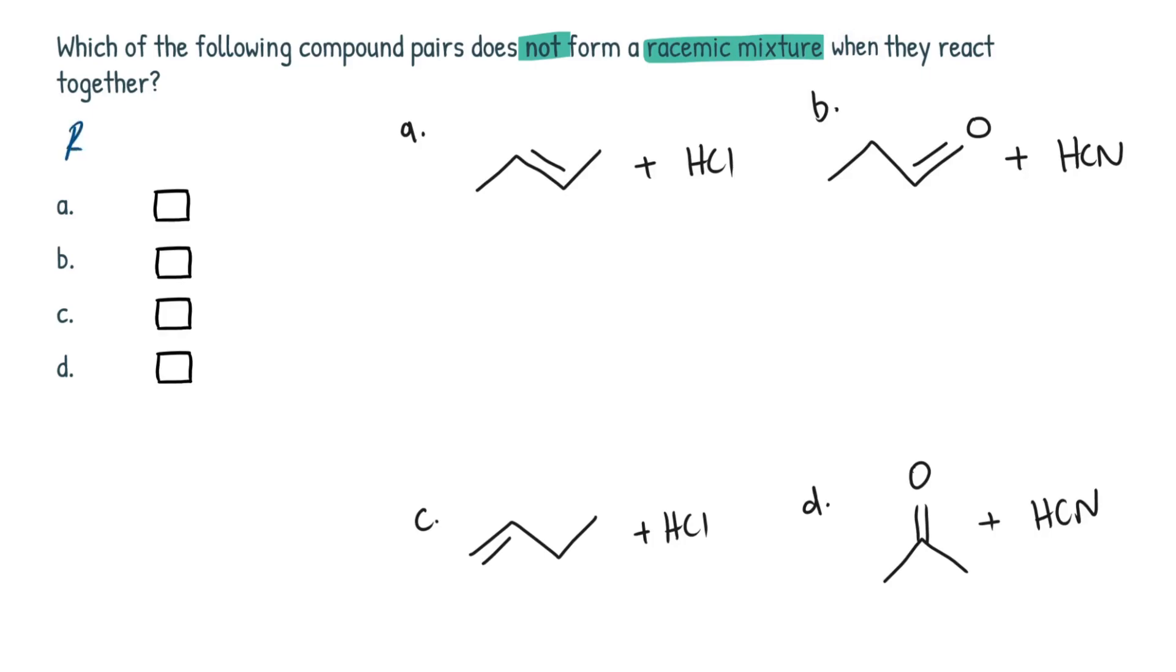A racemic mixture is a mixture which contains a 50-50 mix of the two enantiomers. The two optical isomers. It's also referred to as a racemate.